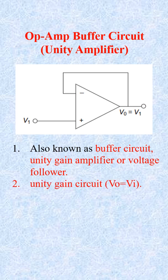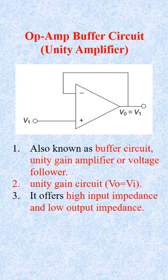The buffer is configured with the output connected directly to the inverting input. This gives a gain of 1, meaning that output voltage exactly matches the input voltage. But why is it so important?